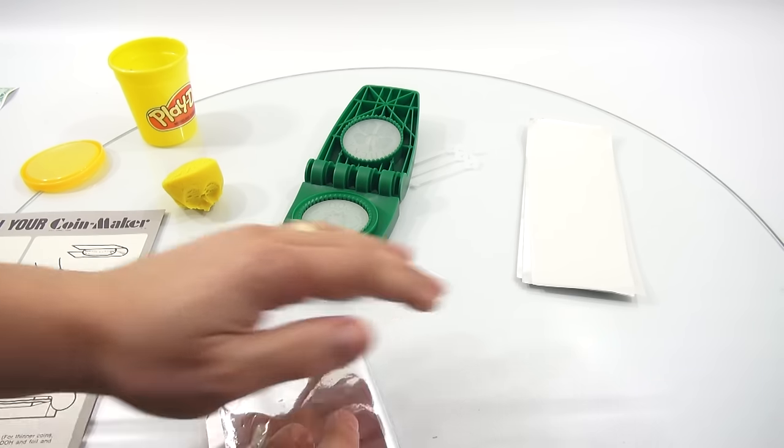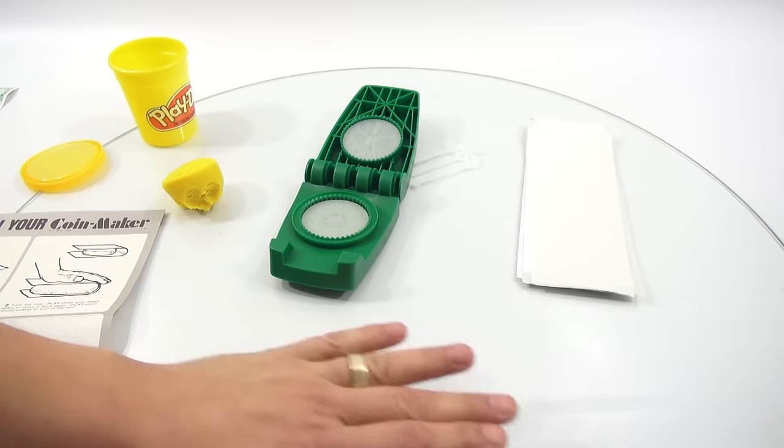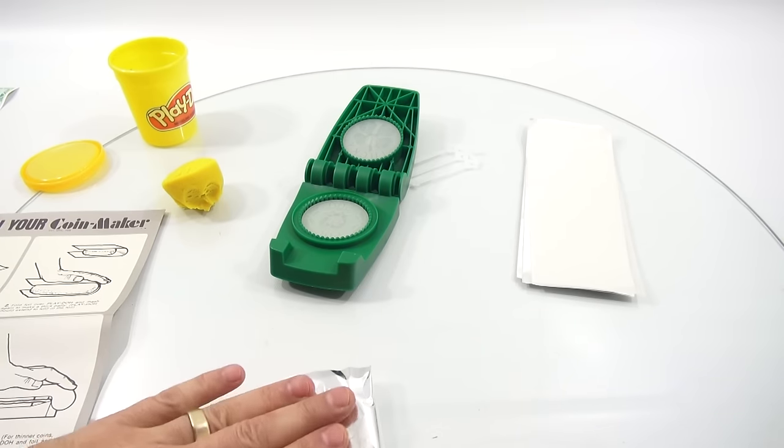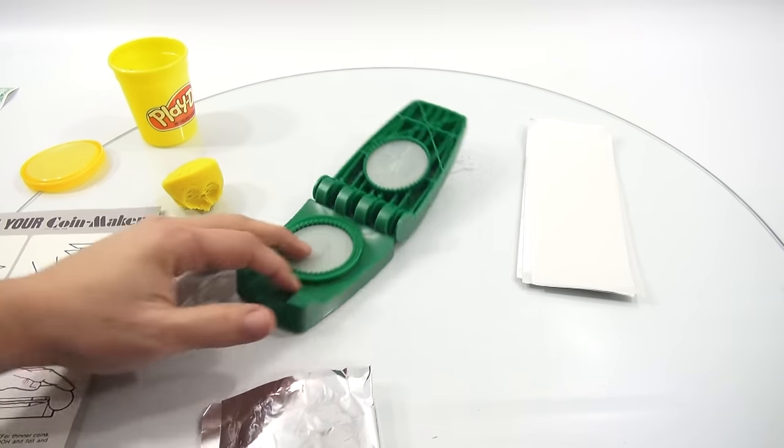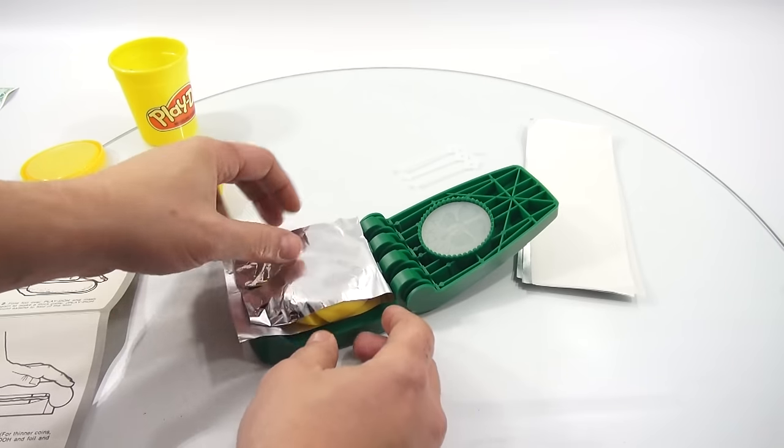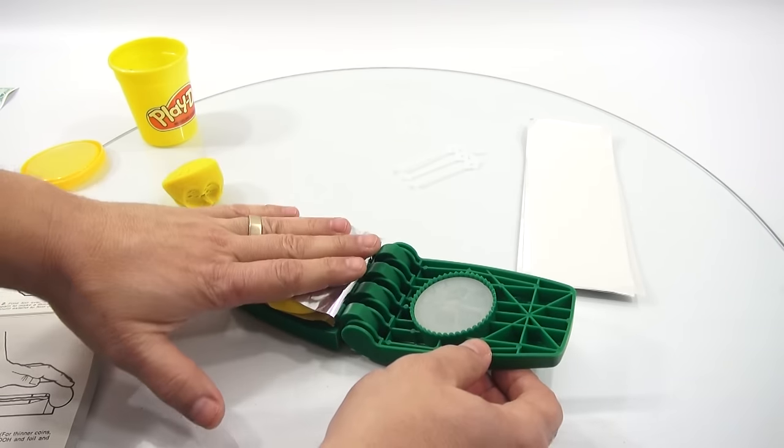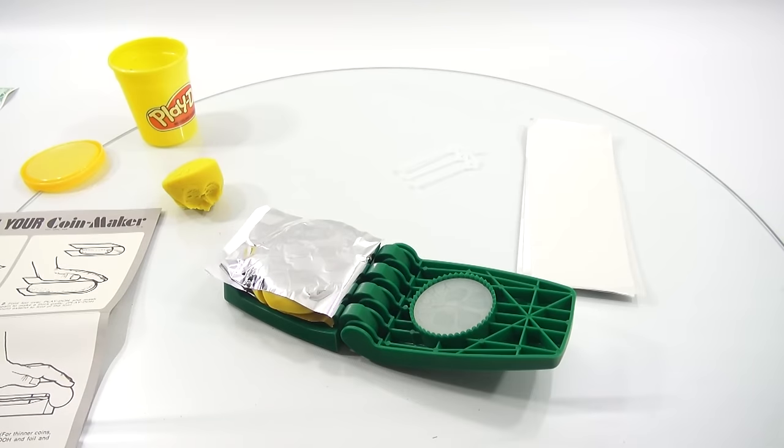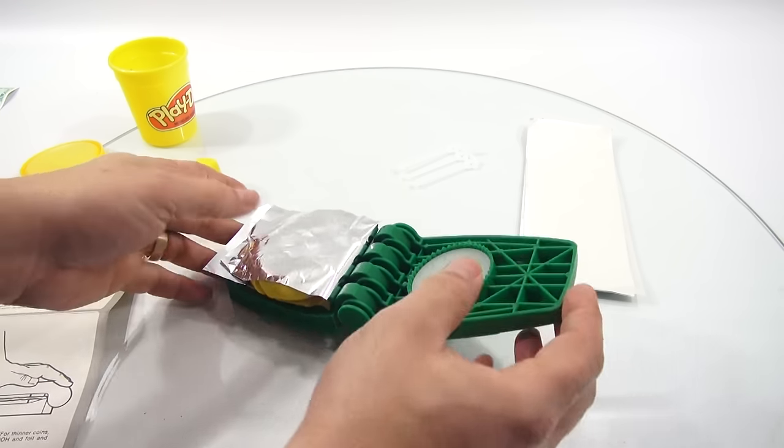Okay. Fold foil over Play-Doh. And mash. Again. To make a thick patty. Alright. Make a thick patty. It really does look like the picture doesn't it. Place patty on lower mold. Okay. So that. The rounded edge is close to the hinge. Rest against the hinge. Rest against the hinge. Press down firmly. For thinner coins. Remove excess Play-Doh and foil. And press down again. Okay.